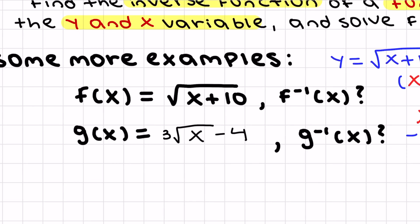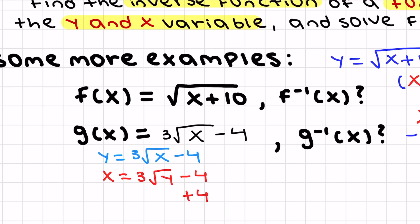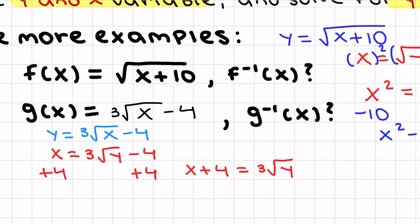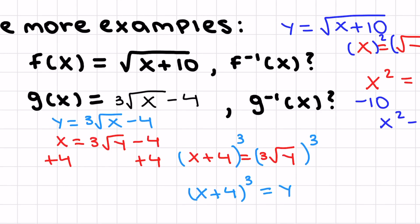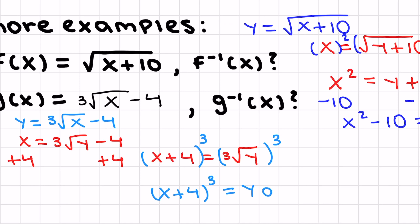Now g(x) = ∛(x - 4). What is the inverse? Write y = ∛(x - 4), switch x and y: x = ∛(y - 4). Add 4 to both sides: x + 4 = ∛y. To remove the cube root, cube both sides: (x + 4)³ = y. You can leave it like this or simplify further using FOIL, but for now the inverse of g(x) is (x + 4)³.